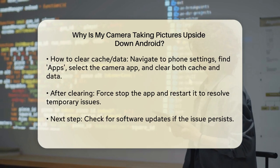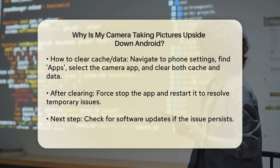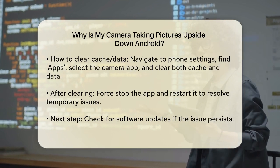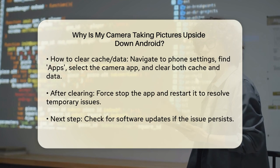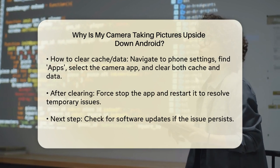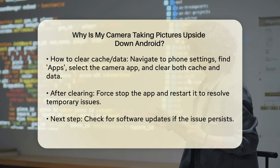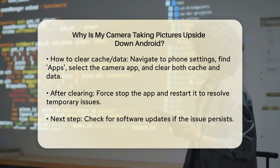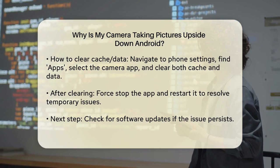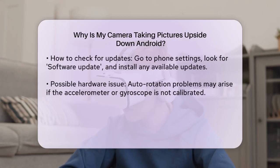If clearing the cache and data does not work, the next step is to check for any software updates. Sometimes an outdated operating system or camera app can cause these kinds of issues. Go back to your phone settings, look for the software update section, and check if there are any updates available. Updating your software to the latest version can fix bugs and improve the camera's performance.